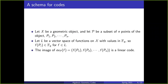For some background, let's take a geometric object x and take a subset of points p1 to pn. Let's take a vector space l of functions on x with values in the finite field Fq, so that f of a point pi is in Fq for functions f in l. The image of our evaluation map from l to Fq, evaluating f at each of the points in the subset, is a linear code. This is a very general schema for constructing codes, and Reed-Solomon codes fall under this schema.